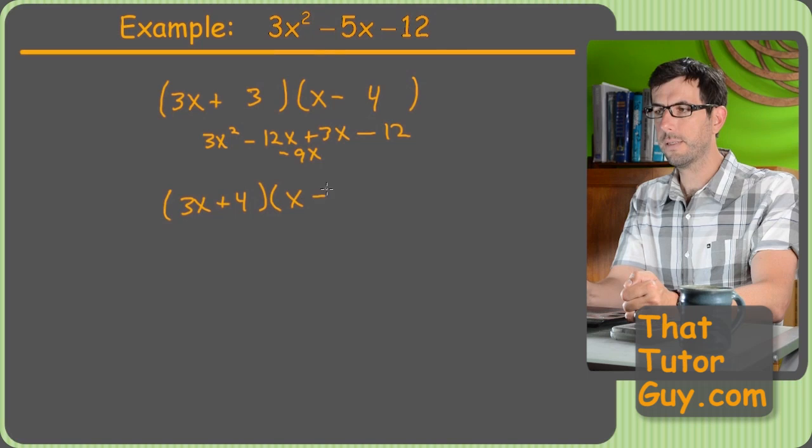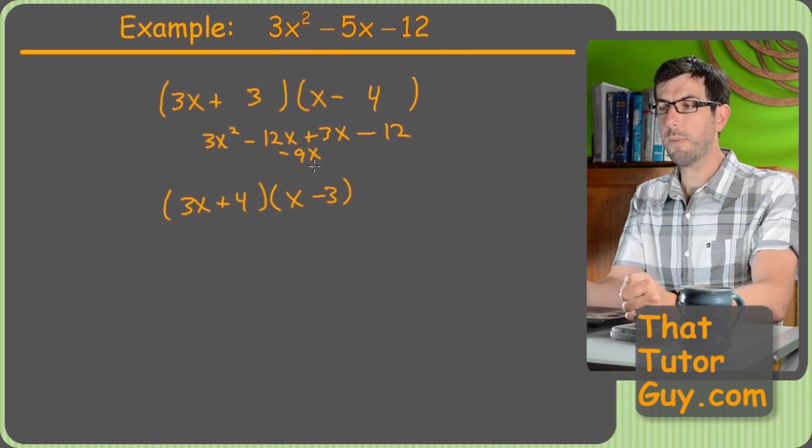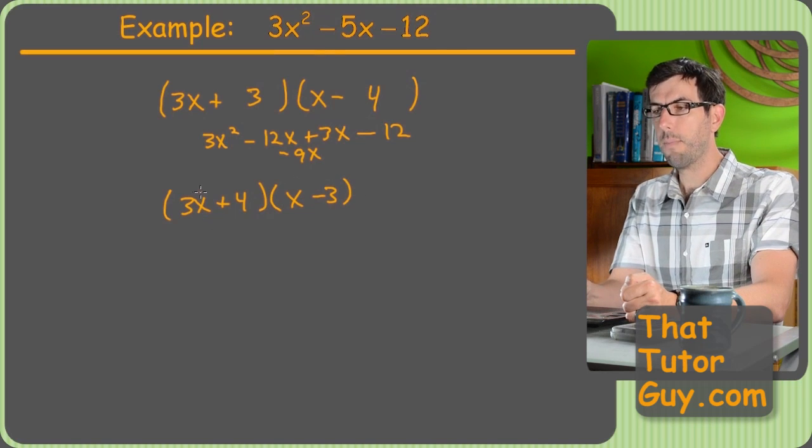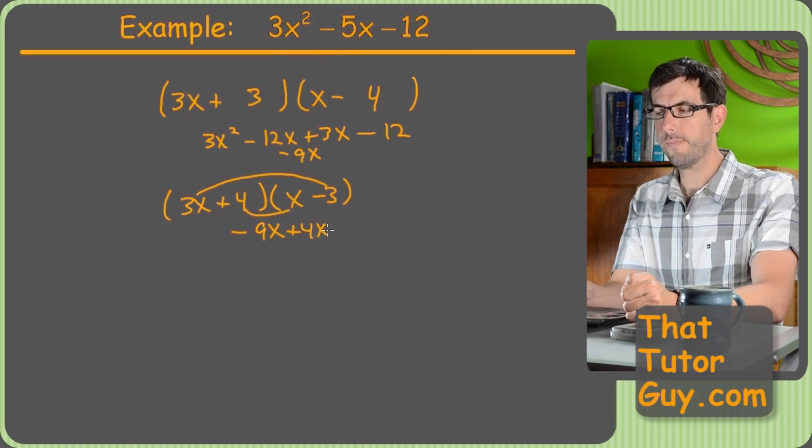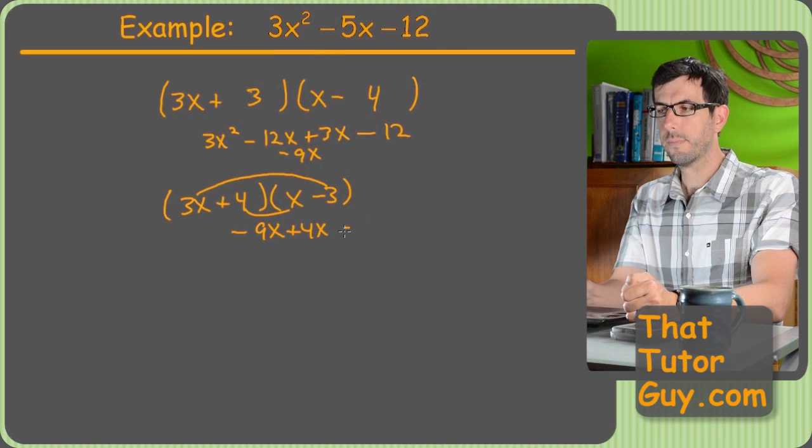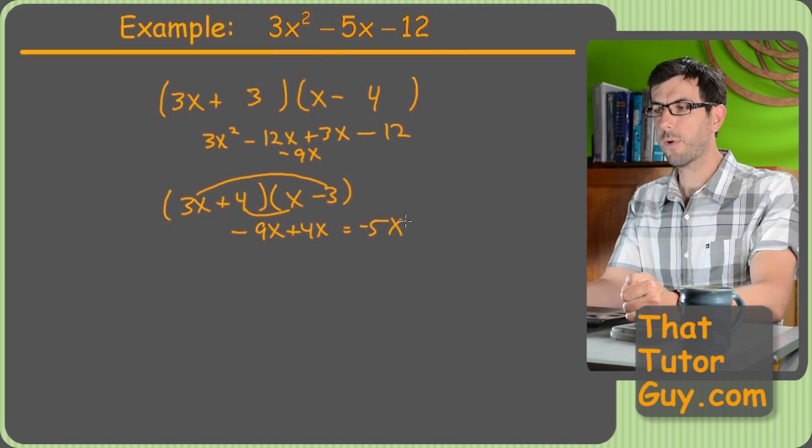Now my middle term will be 3x times negative 3, which is negative 9x. And then this one is plus 4x. Oh, awesome, it works. Negative 5x is, in fact, the correct middle term.